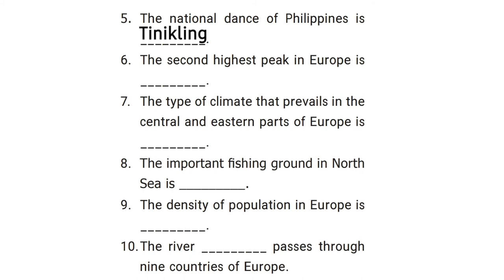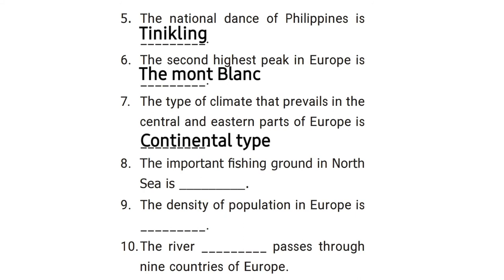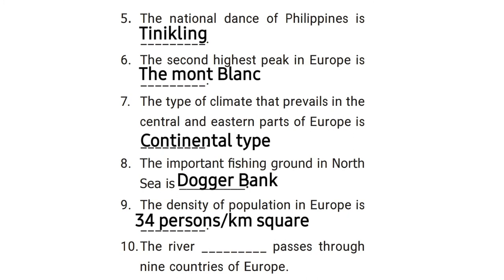Question 6: the second highest peak in Europe is dash — answer: Mont Blanc. Question 7: the type of climate that prevails in the central and eastern parts of Europe is dash — answer: continental type. Question 8: the important fishing ground in the North Sea is dash — answer: Dogger Bank. Question 9: the density of population in Europe is dash — answer: 34 per kilometre square. Question 10: the river dash passes through nine countries of Europe — answer: Danube.